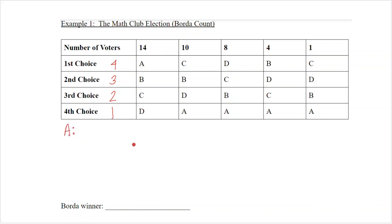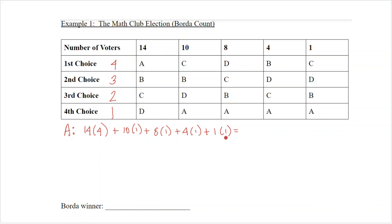There are several ways to figure out how many points each candidate earns. For Alicia: 14 people voted her as their first choice, earning her four points each. Then ten people had her in last place, eight people had her in last place, four people had her in last place, and one person had her in last place. This method helps you stay efficient without making shortcuts. When we total this up, Alicia has earned 79 points.